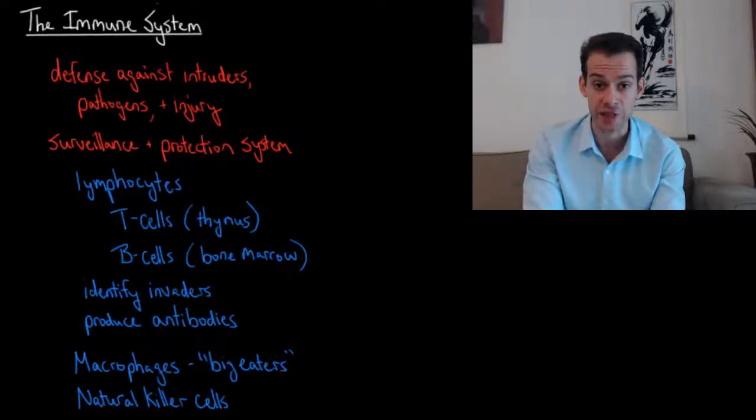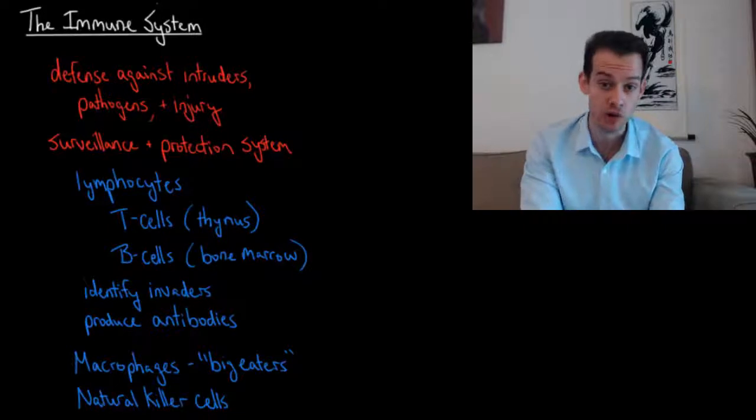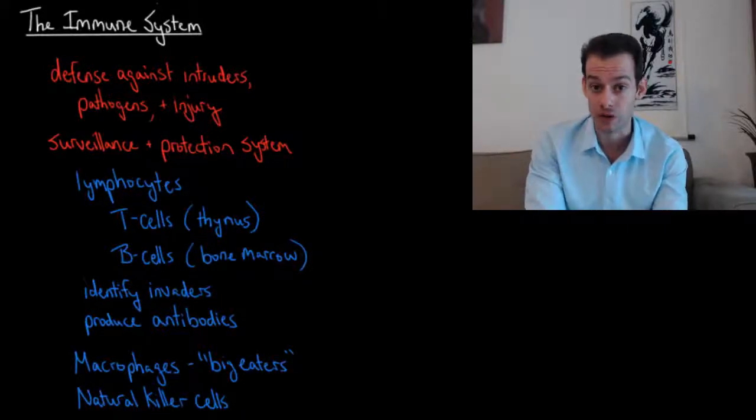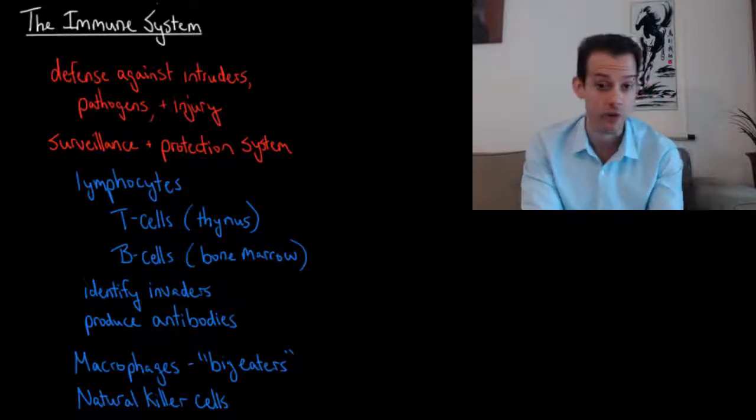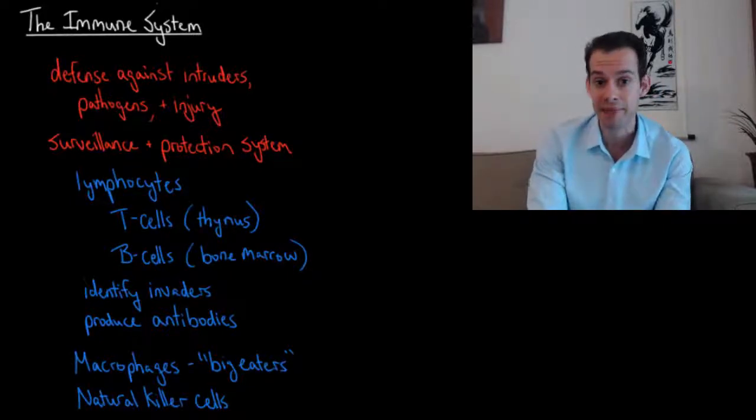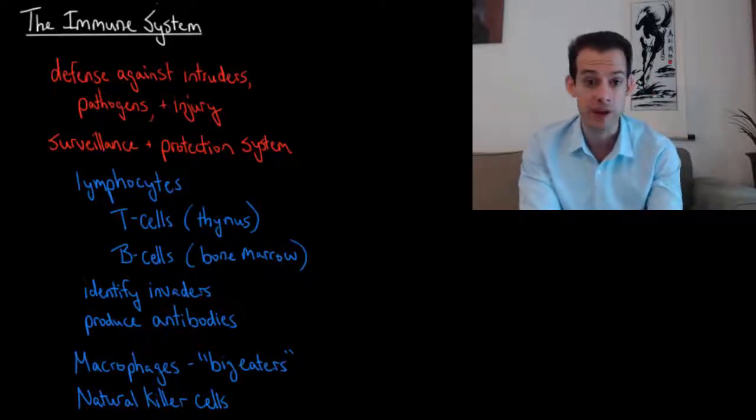The immune system refers to the body's natural defense against things like intruders, pathogens, or injury. We can think of it as having two main functions. There's a surveillance function where it has to look out for invading cells or potentially dangerous cells or look out for sites of injury. And then a protection system where it breaks down or destroys invading cells or helps us to recover from injury.